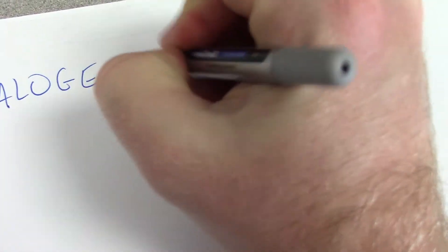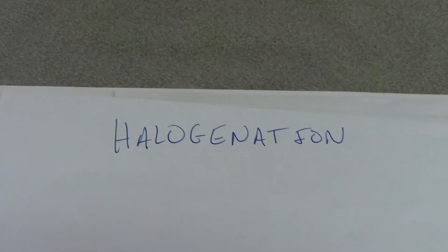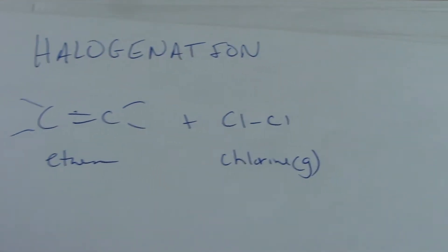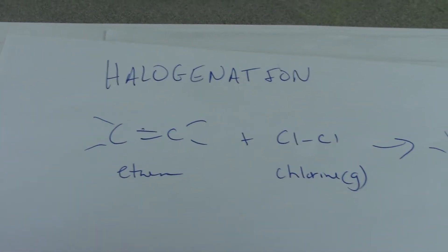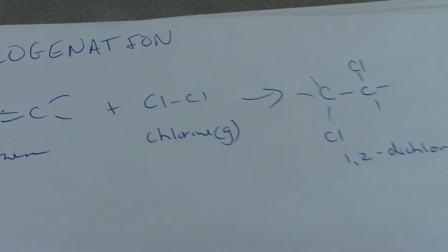Now let's look at halogenation. It's similar, but rather than adding hydrogens, we add halogens. So let's say we have ethene plus Cl2 — chlorine gas. We can turn this into a saturated hydrocarbon with chlorine attached, and this would be 1,2-dichloroethane.